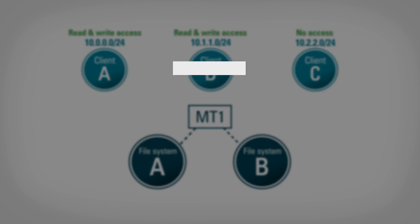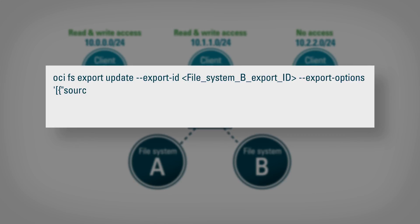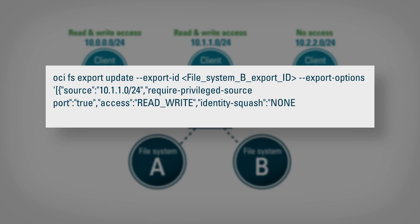Next, we need to set file system B to allow read-write access only to client B, who is assigned to CIDR block 10.1.1.0/24. Since neither client A nor client C is included in this CIDR block, they cannot access file system B. Because we did not include client C's CIDR block in any of these export options, neither file system A nor file system B will be visible to client C.